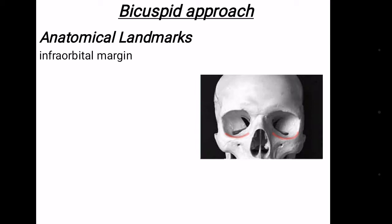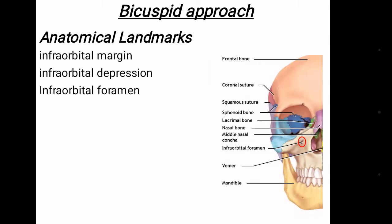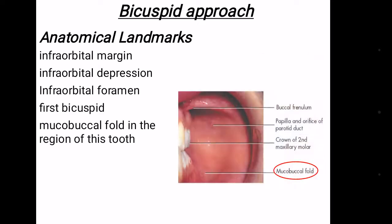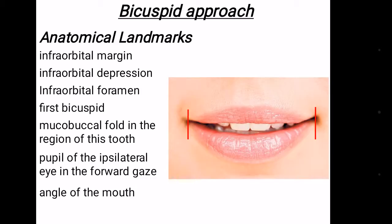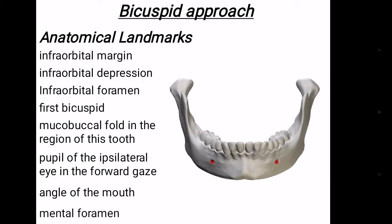Anatomical landmarks include the infraorbital margin, infraorbital depression, infraorbital foramen, first bicuspid, mucobuccal fold in the region of this tooth, pupil of the ipsilateral eye in forward gaze, angle of the mouth, and mental foramen.